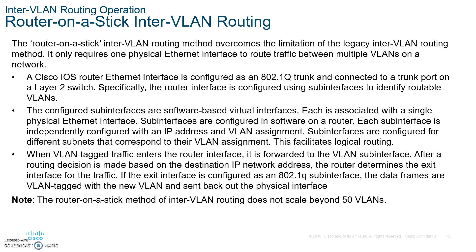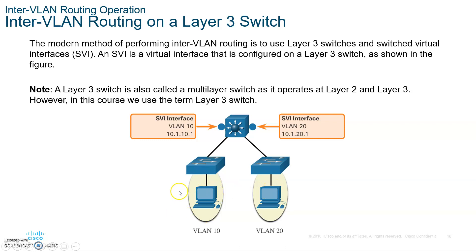With a Layer 3 switch, a port can be configured with an IP address as the default gateway for a specific VLAN — that's the SVI, the Switched Virtual Interface. Also write this down: each port on a Layer 3 switch is a dedicated default gateway for a specific VLAN, which we'll see in a few minutes.